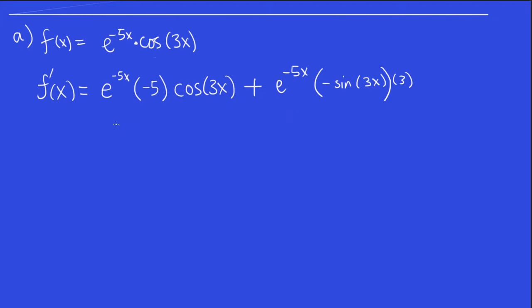Since we don't have to simplify, we can stop there. If we were to simplify, I think we should factor out a negative e to the minus 5x. Why don't I just do that quickly, even though we're not supposed to. This would be 5 cos 3x plus 3 sine 3x. I think that's right. So that takes care of the first problem.